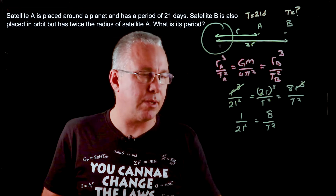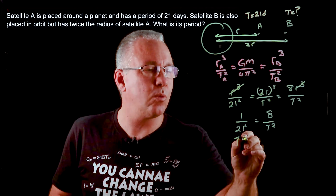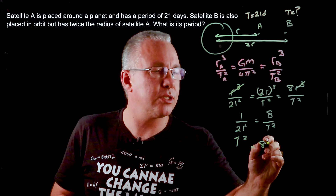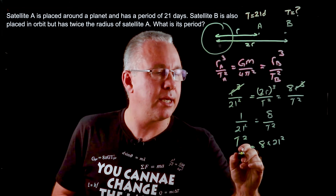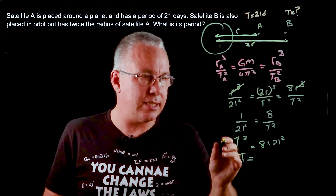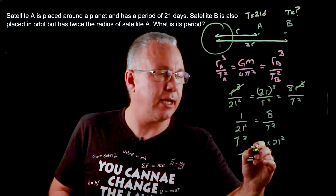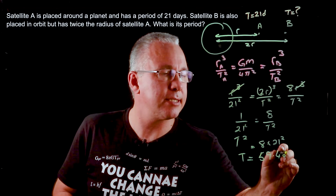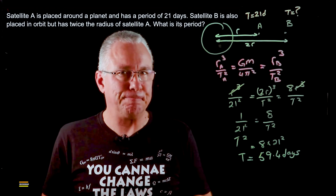Cross-multiplying gives T² equal to 8 times 21². Solving for T, you end up getting 59.4 days. And there you have a Kepler's third law problem solved.